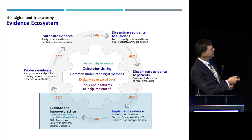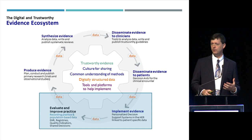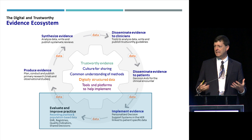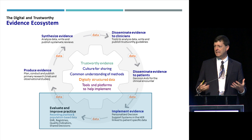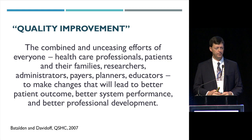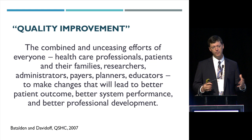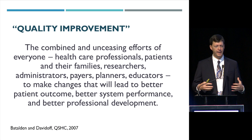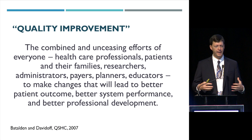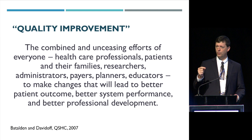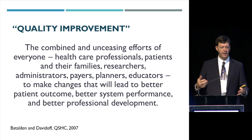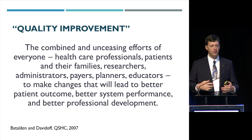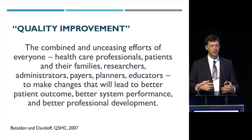Looking at the lower left-hand part of the ecosystem about improving practice, there's a lot of confusion about what goes into this. Quality improvement, as defined by Batalden and Davidoff in 2007, is the combined and unceasing efforts of everyone — professionals, patients and families, researchers, administrators, planners, payers, educators — to make changes that lead to better patient outcomes, better systems — excellent care at lower cost, better access for more patients — and better professional development of nurses, doctors, pharmacists, and administrators.